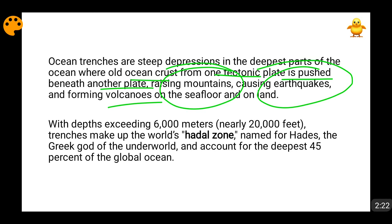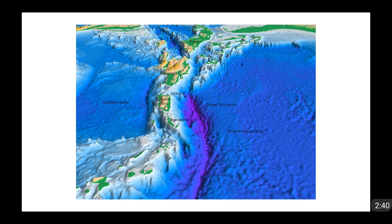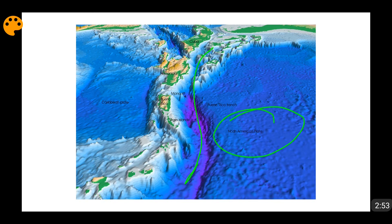The depths at which these trenches are formed is known as the Hadal Zone, which lies more than 6000 meters deep beneath the ocean surface. It is named after Hades, the Greek god of the underworld. This Hadal Zone accounts for the deepest 45% of the global ocean. Here is a figure of an oceanic trench named the Puerto Rico Trench — two oceanic plates, the North American plate and the Caribbean plate, are converging. Because of this subduction, the trench is formed where the oceanic crust is getting destroyed.